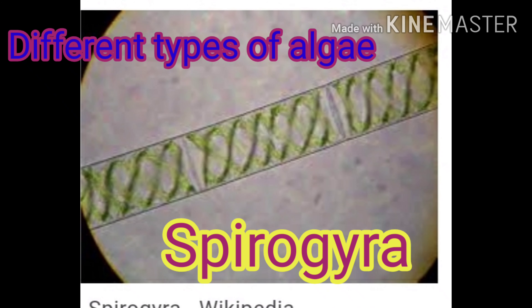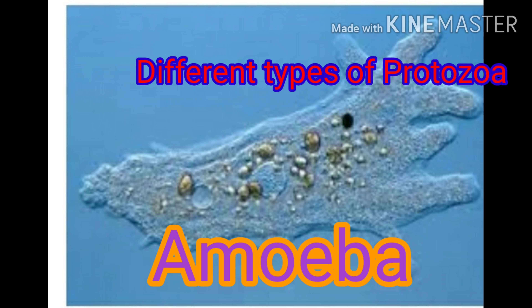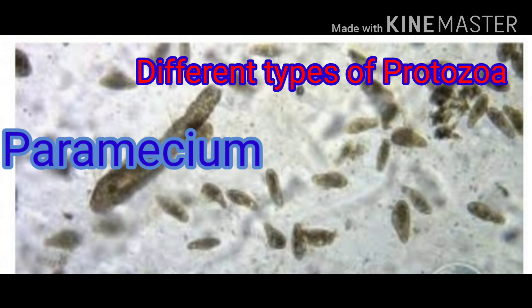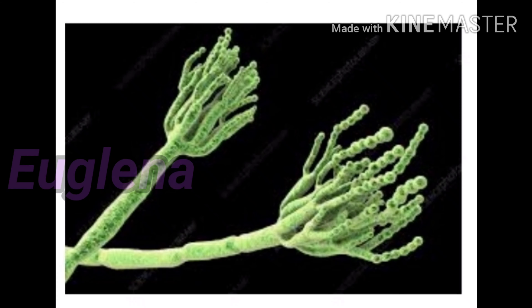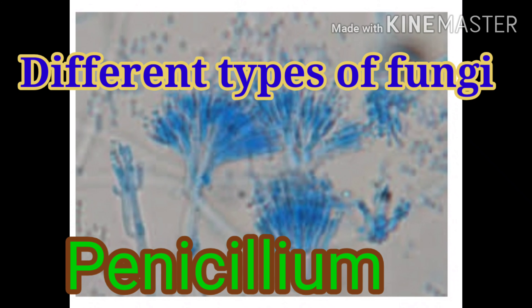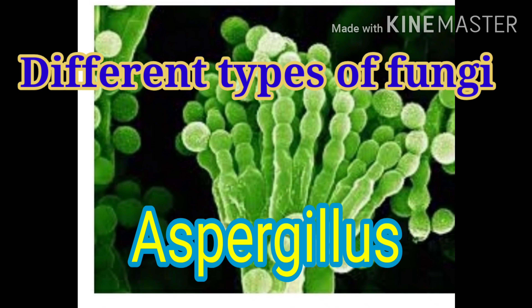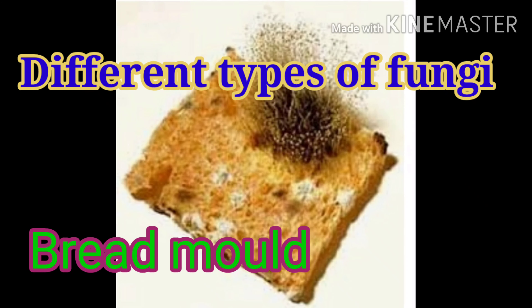The next group of microorganisms are protozoa. It includes amoeba, paramecium and Euglena. Different types of fungi are penicillium, aspergillus, mushroom and bread mold.